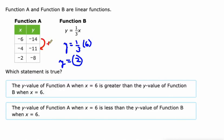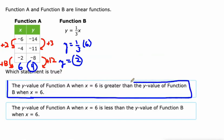So with function A, that's an increase of 3. That's an increase of 2. So to go from negative 2 up to 6, that's an increase of 8. So 8 is 4 times as much as 2, so the increase here is going to be 4 times as much as 3. So from negative 8 plus 12, that would be 4. So the value of function A is greater than the value of function B at X equals 6.